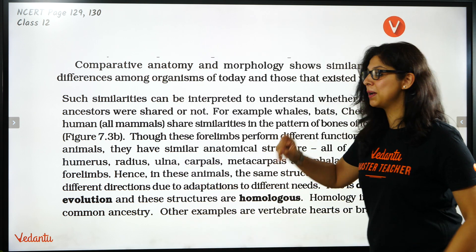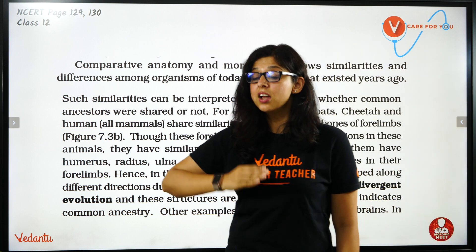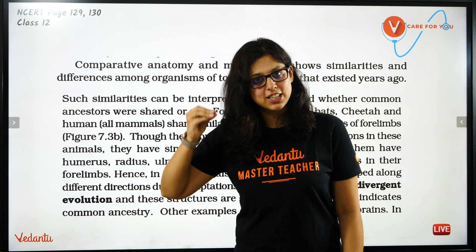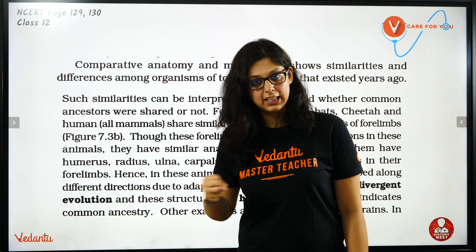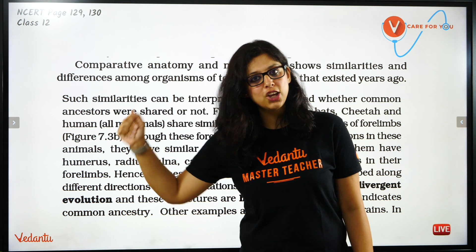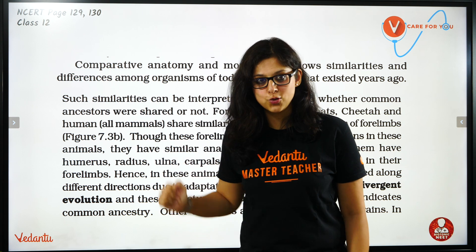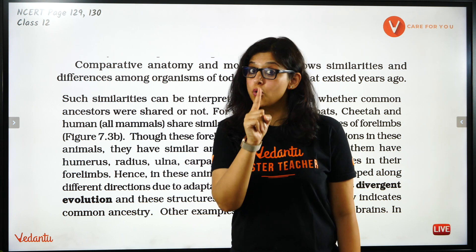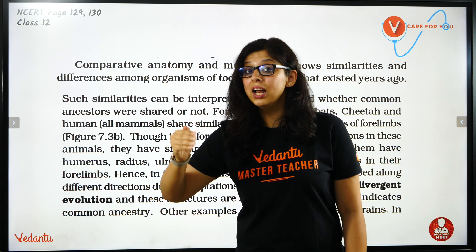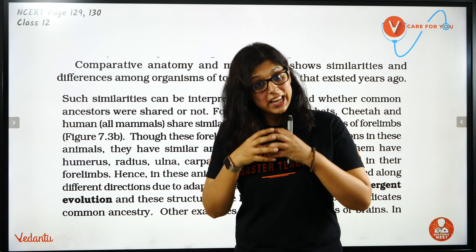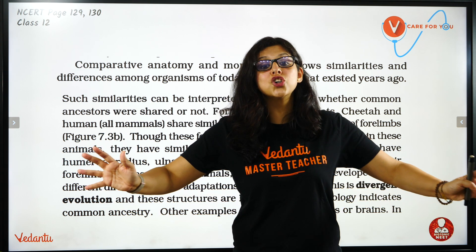Comparative Anatomy and Morphology shows similarities and differences. Sometimes you will see humerus, radius, carpal, metacarpal, or phalanges. But some organisms use these for flying, some for writing, some for running, and some as flippers. The origin was the same, but they have different functions — so one structure has different functions. This is called Divergent Evolution.